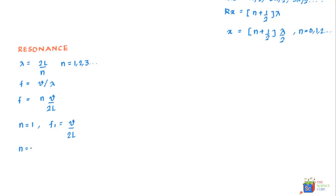For N is equal to 2 we get F2 is equal to 2V upon 2L. And for N is equal to 3 we get F3 is equal to 3V upon 2L.